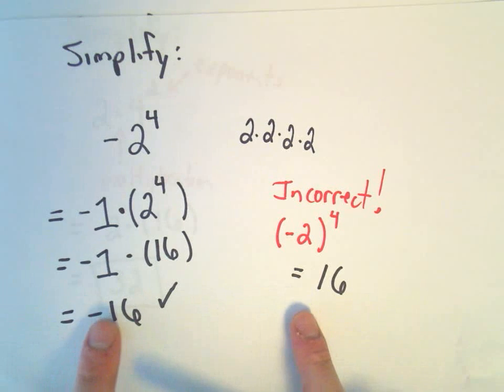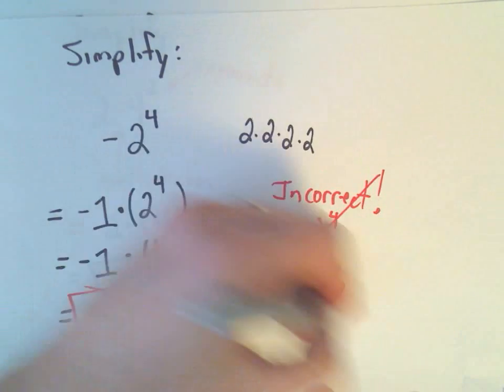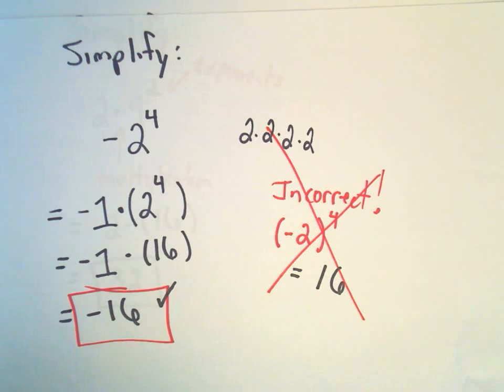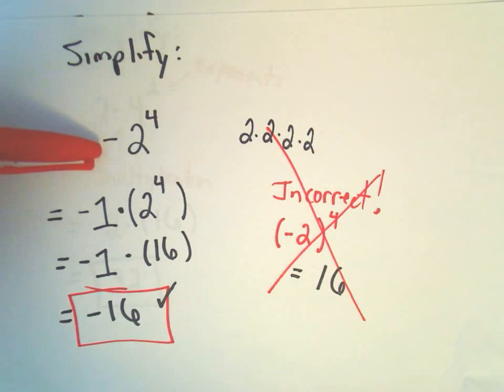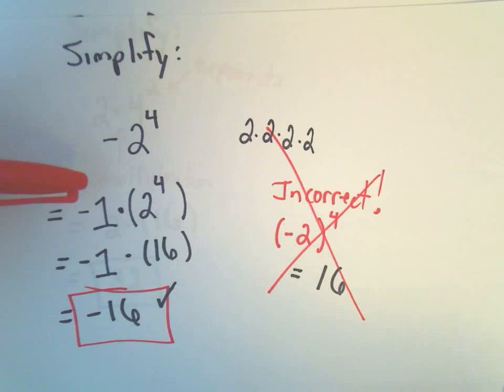Well, notice there's definitely something different between negative 16 and positive 16. And again, the first one is the correct way. If you interpret it this way, that's not right. And again, it's very easy to do. So I always, my own self, when I did these, I used to always insert the negative 1 just to make sure that I did it correctly.